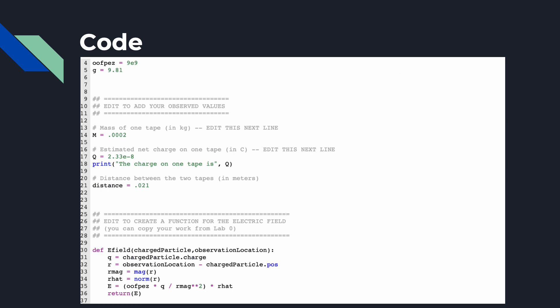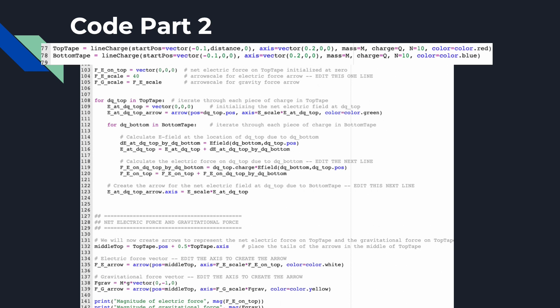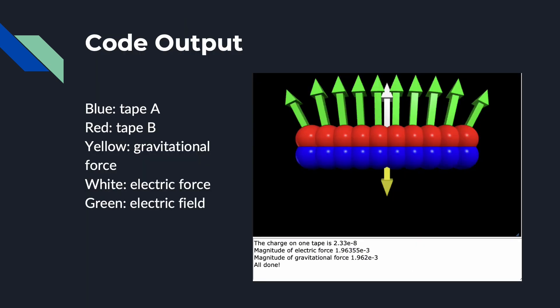Here is the first page of my GlowScript code, and here is the second page. In the code output, the blue dots represent tape A, the red dots represent tape B, the yellow arrow represents gravitational force, the white arrow represents electric force, and the green arrows all represent the electric field.